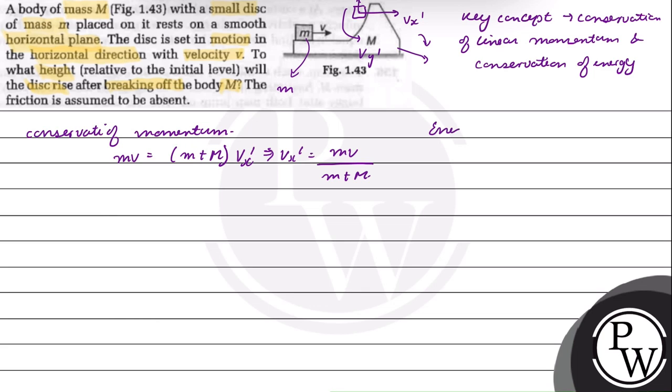From energy conservation, since the system works in the field of gravity, initial kinetic energy (1/2)mv² will be equal to final kinetic energy in x-direction plus final kinetic energy in y-direction plus potential energy mgh', where h' is the height of the break point from initial level.